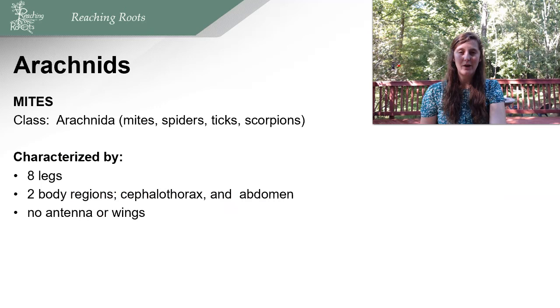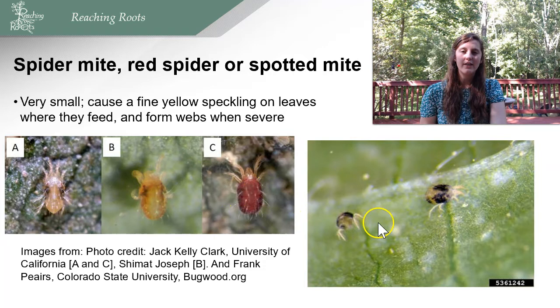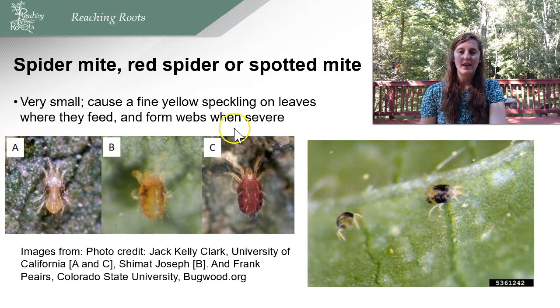Next we'll talk about arachnids — class Arachnida includes mites, spiders, ticks, and scorpions. They're characterized by eight legs, two body regions, and no antennae or wings. Spider mites can come in a wide variety of colors — tan, yellow, raspberry red. These little guys crawl on the leaf; they're very small and hard to see. They cause a fine yellow speckling on the leaves, and if you find these speckles, that can be a sign of spider mites. When severe, they form webs.